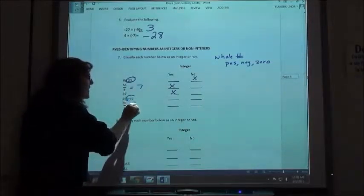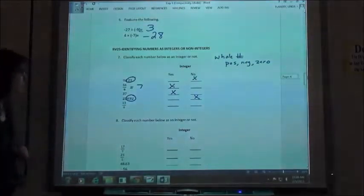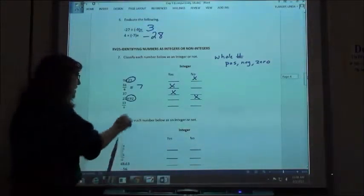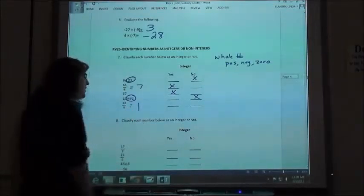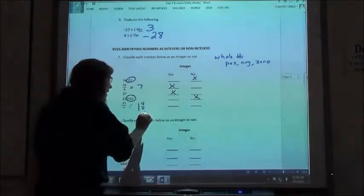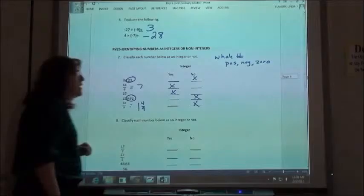259.92. Again, has that decimal at the end. Not going to be a nice whole number. 13 ninths. If I divide 9 into 13, 9 goes into 13 once, but I have some left over. I have 4 ninths. So 1 and 4 ninths is not a whole number. Not going to be an integer.